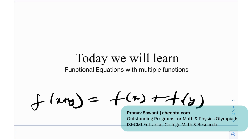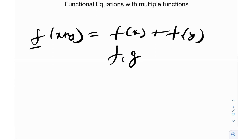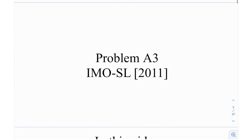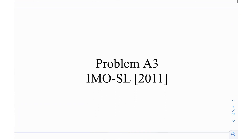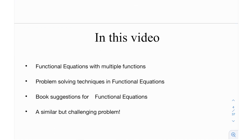So f is the function and it's the only function over there. We have two variables x and y, essentially the function is f. But in this question we're going to have two functions — f and g — and we're going to see how we can deal with that. This is problem number A3, algebra 3, from the IMO shortlist in 2011, and in this video we're going to be looking at functional equations with multiple functions.